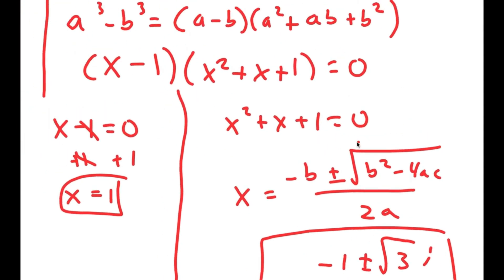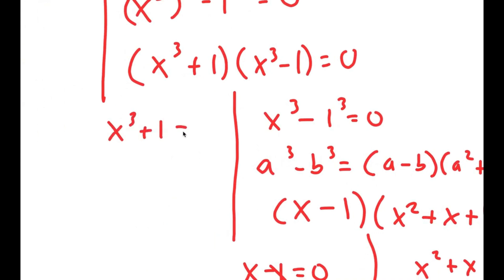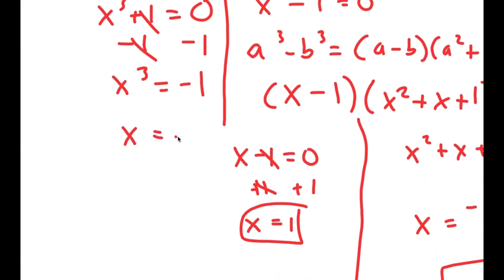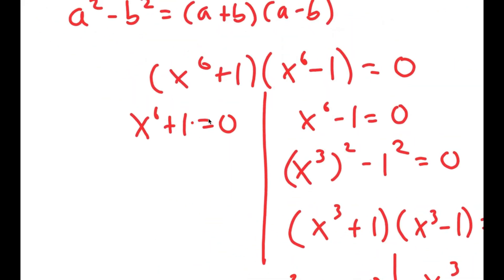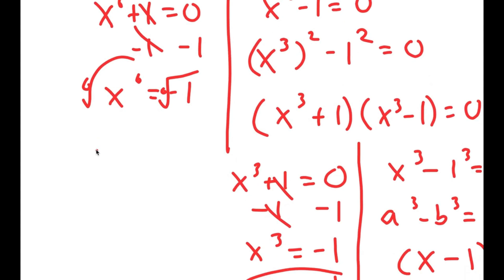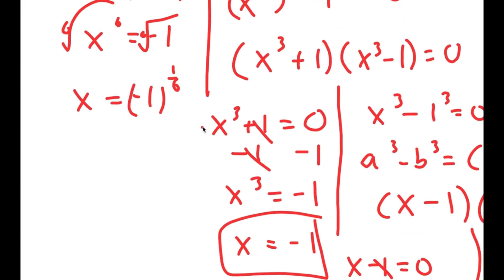So these are two more solutions and we aren't done yet because we also have to solve the remaining equations. For x to the power of 3 plus 1 equals 0, I'm going to subtract 1 on both sides, so I get x to the power of 3 equals negative 1, meaning x is also equal to negative 1. Now for x to the power of 6 plus 1 equals 0, I subtract 1 on both sides, so x to the power of 6 equals negative 1, and taking the 6th root I get x equals negative 1 to the power of 1 over 6.